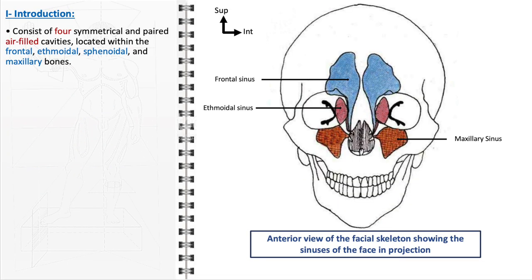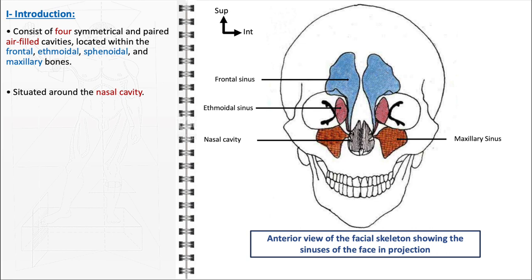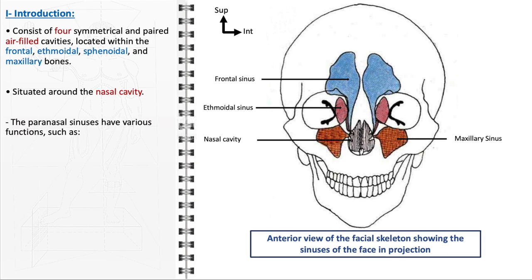The paranasal sinuses are a complex and vital part of our cranial anatomy. These sinuses consist of four symmetrical pairs of air-filled cavities, intricately located within the bones of the face — specifically the frontal, ethmoidal, sphenoidal, and maxillary bones. Uniquely positioned around the nasal cavity, these sinuses play several essential roles in maintaining our health and well-being.